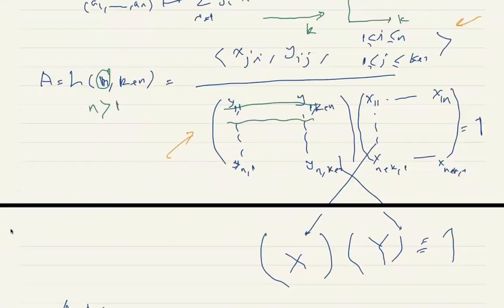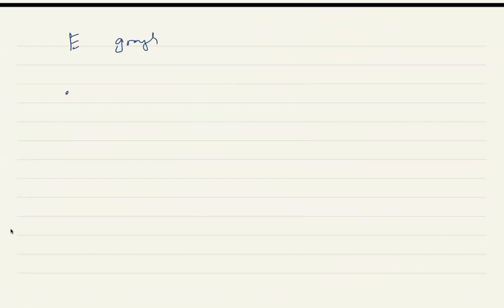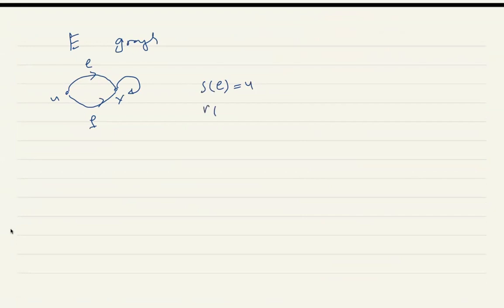Now let's go toward describing what is a Leavitt path algebra. You start with a graph — it has vertices, directed edges, and the edges have directions. A bit of notation: the source of edge E is S(E), where it starts, and then where it ends is the range of E, R(E).